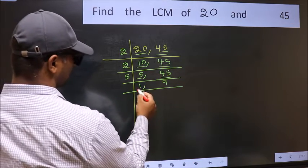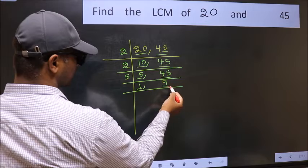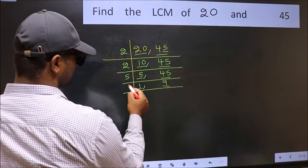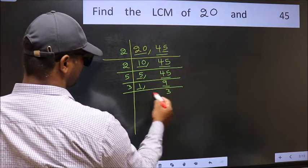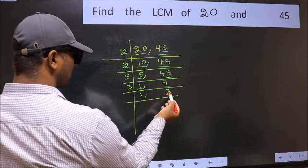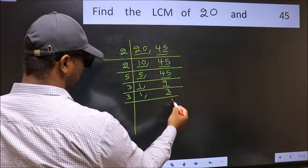Now we got 1 here, so focus on the next number 9. 9 is 3 threes, 9. Now here we have 3, 3 is a prime number, so 3 once is 3.